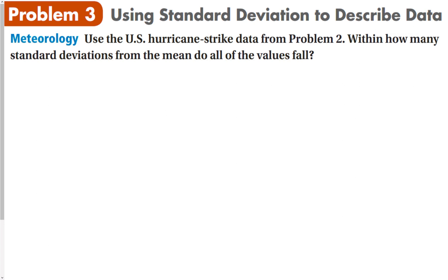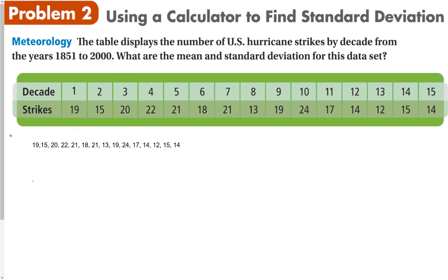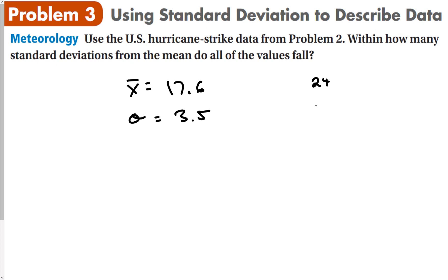Using the hurricane strike data from problem 2, how many standard deviations from the mean do all the values fall? The mean was 17.6, so x bar is 17.6, and the standard deviation is 3.5. The largest value on this table is 24 and the smallest value is 12.